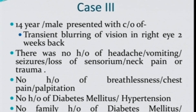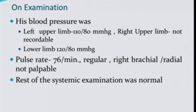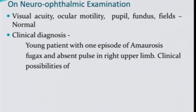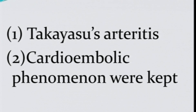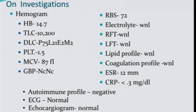The third patient is a 14-year-old male who presented with transient visual obscuration — amaurosis fugax — in the right eye. On examination, BP and pulse were normal on the left side, but there was no recordable pulse or BP on the right side, while the neuro-ophthalmic examination was normal. Two possibilities arose given the patient's age: Takayasu arteritis or an embolic phenomenon. Investigation did not find any cardiac or systemic cause of embolization.